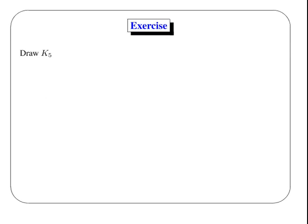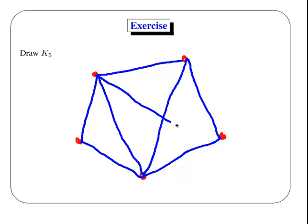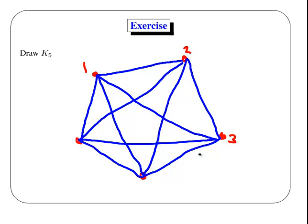What we are going to do here is draw K5 — a graph with 5 vertices. So let's first draw our vertices: 1, 2, 3, 4, and 5. Between each pair of vertices we draw an edge. So this is a K5 — between each pair of the vertices we have an edge.